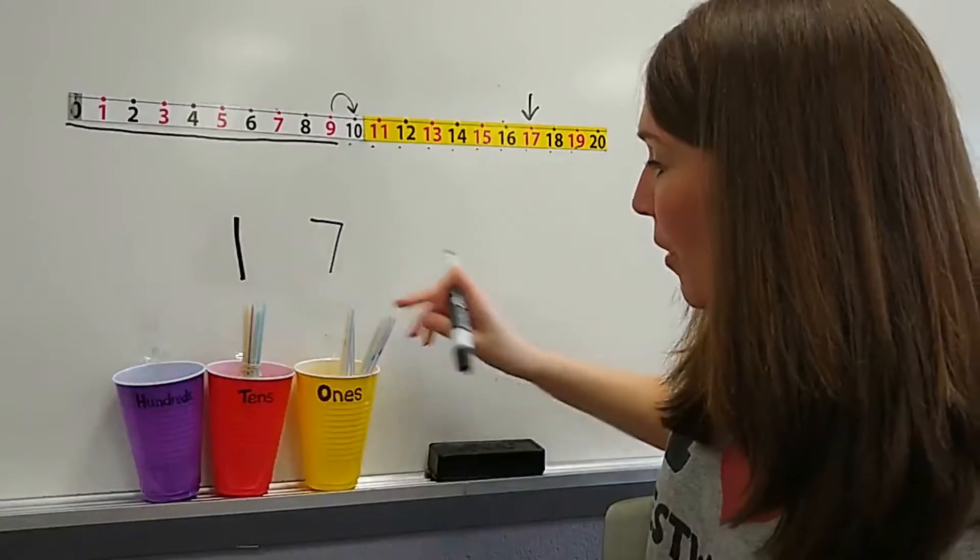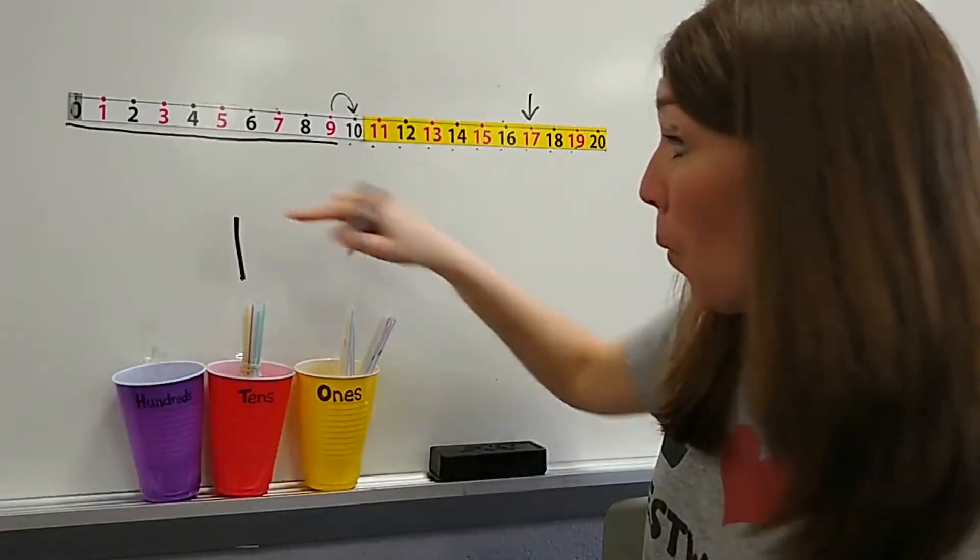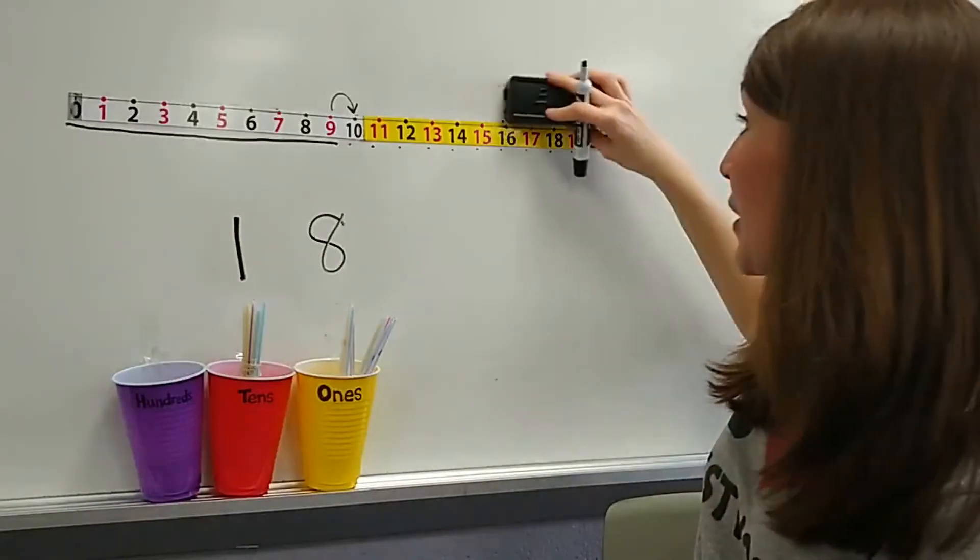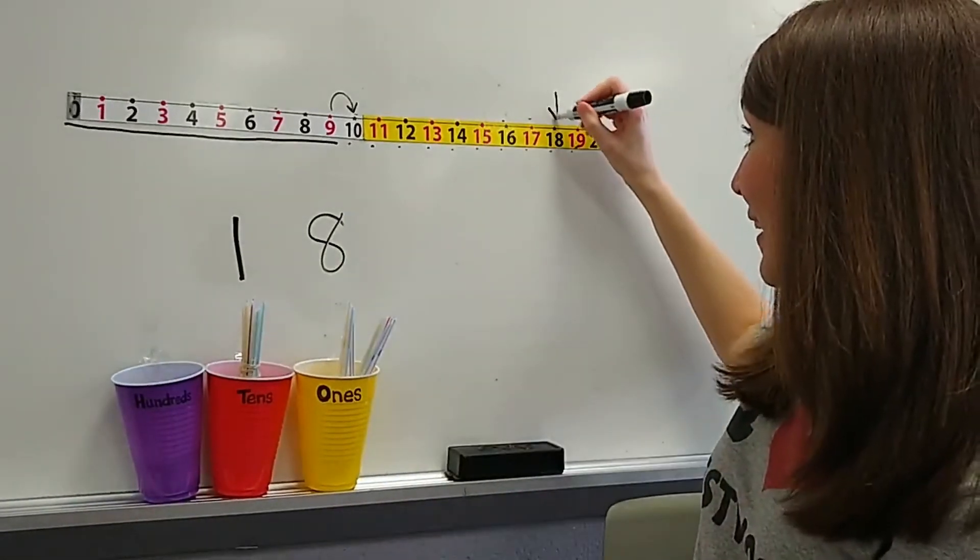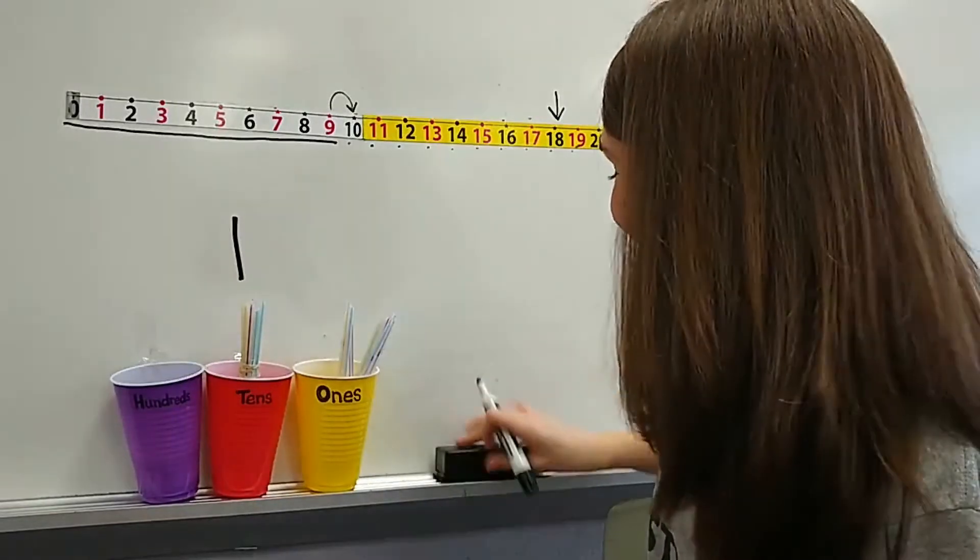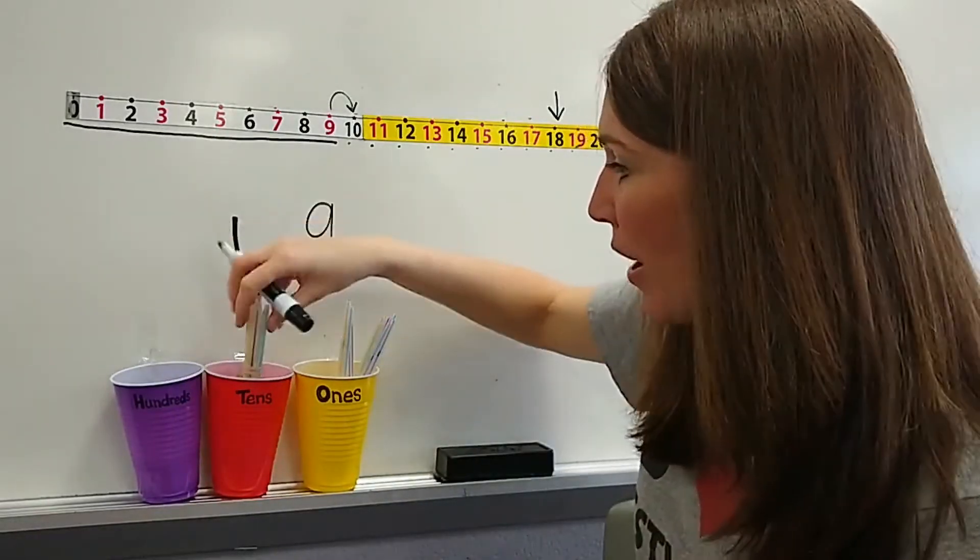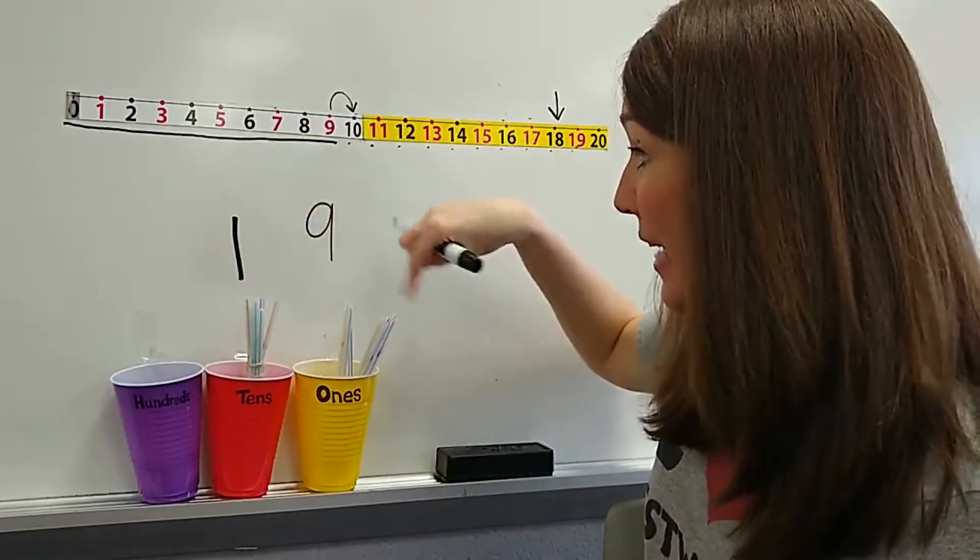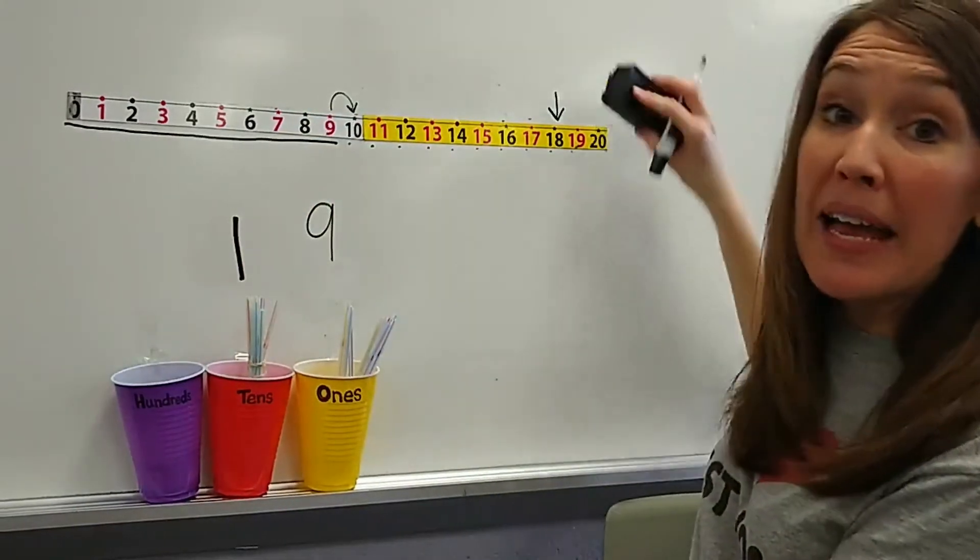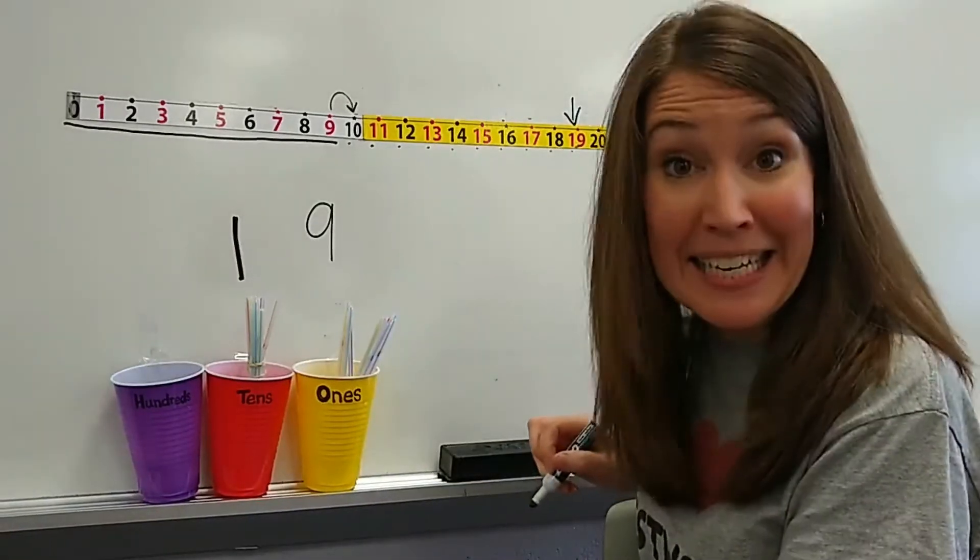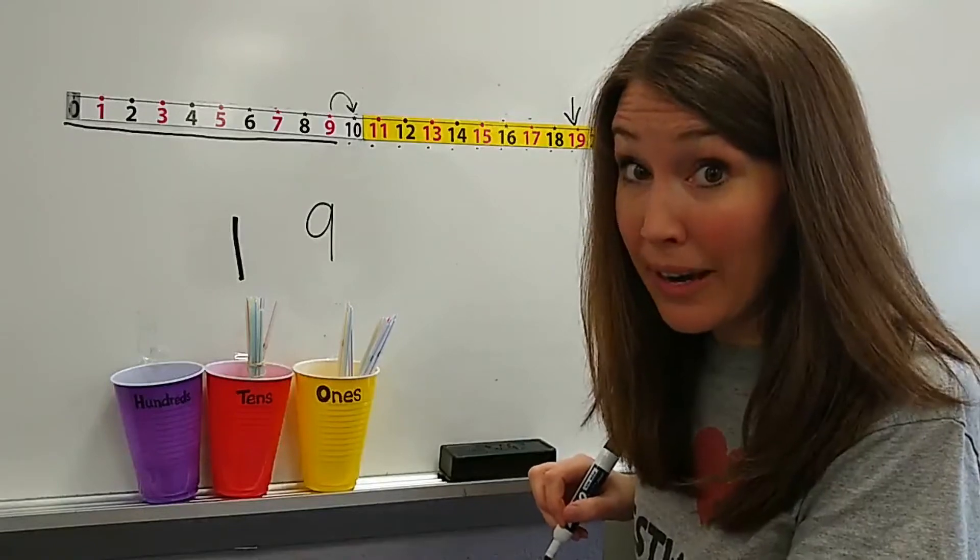If I add one more, one group of 10 and eight little ones. My number is 19. Now this is where it gets fun.